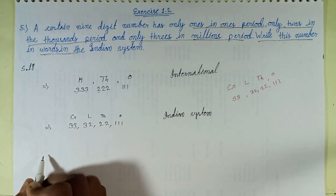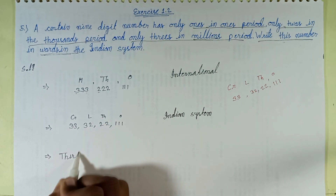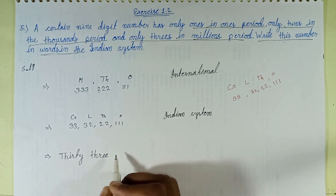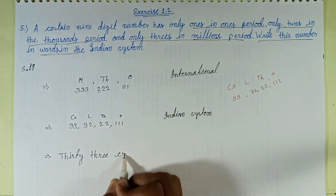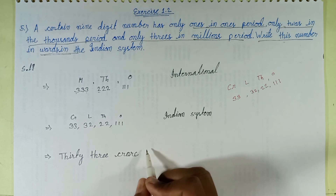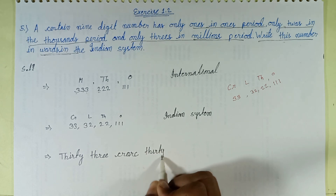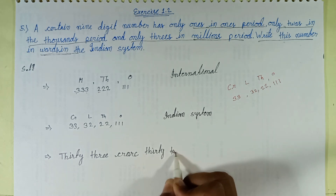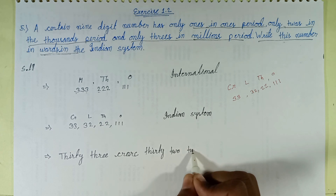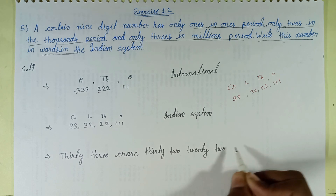Now writing in words: 33 crore, 32 lakh, 22 thousand, 111. This number written in the Indian system in words form is: thirty-three crore, thirty-two lakh, twenty-two thousand, one hundred and eleven.